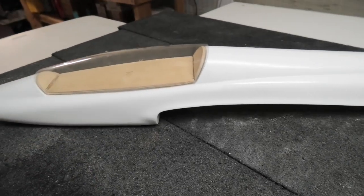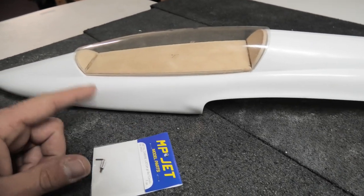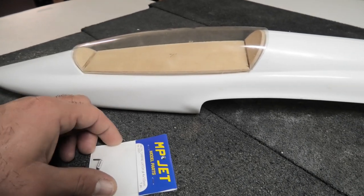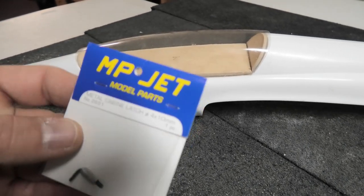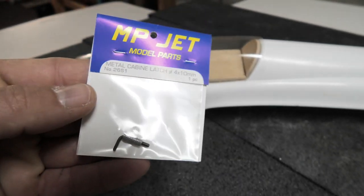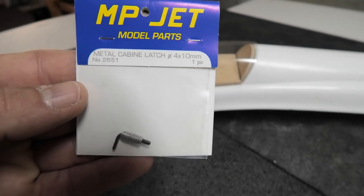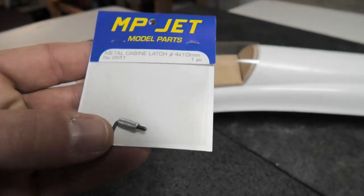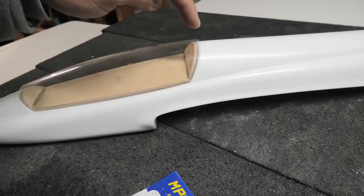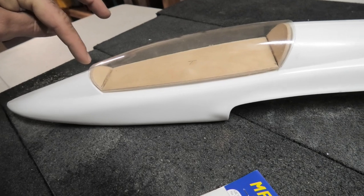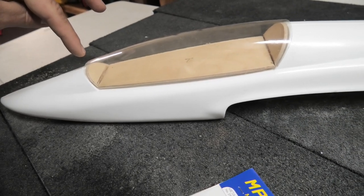The next thing I'm going to do is the latch mechanism. For that, I'm going to use this MPJet spring-loaded canopy latch. That'll go back here somewhere, and then I'm going to put a pin in the front right here.